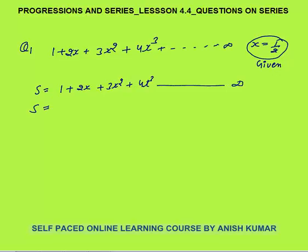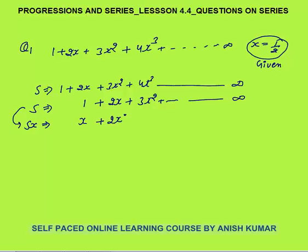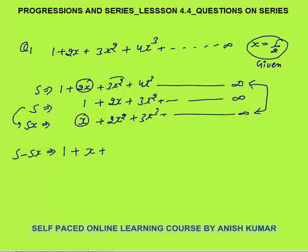Let S = 1 + 2x + 3x² + 4x³ up to infinity. The specific method: write one term behind the entire series, then multiply that shifted series by x to get: x + 2x² + 3x³ up to infinity. Now subtract the third series from S term by term. The right-hand side gives: 1, then 2x - x = x, then 3x² - 2x² = x², then 4x³ - 3x³ = x³, and so on up to infinity.